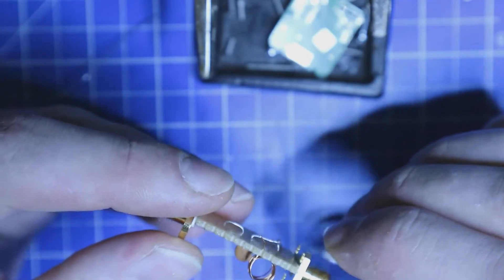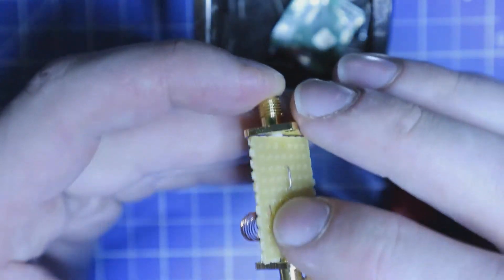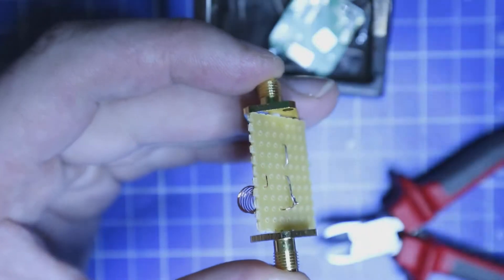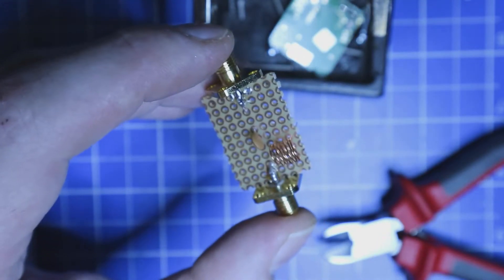And I'm going to trim off the lead of the coil here a bit. And on the other side, I'm going to fiddle it through a hole here again and then solder it on the outside.